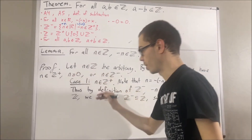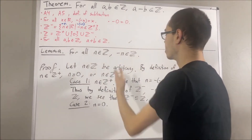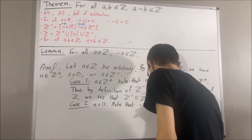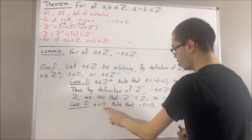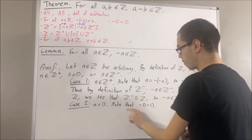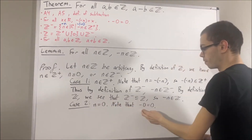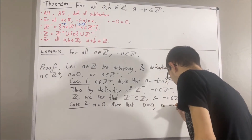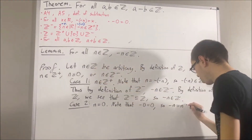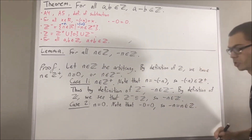Now let's move on to the case n is equal to zero. The negative of zero is equal to zero. Since n is equal to zero, we can substitute this zero for n, and we have negative of n is equal to n. We know that n is an integer, so this tells us that negative of n is an integer.